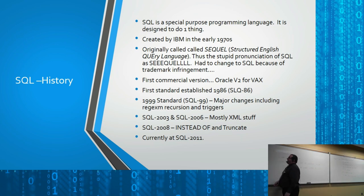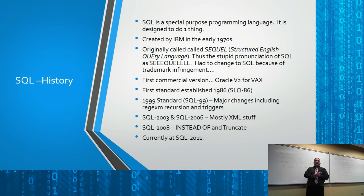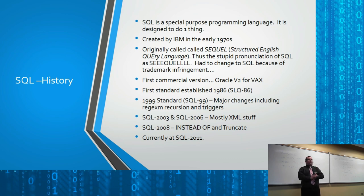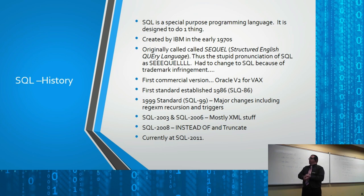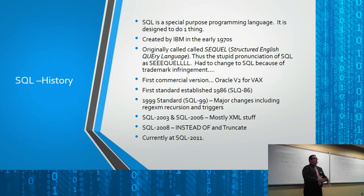The first SQL standard was established in 1986 — it took about 14 to 16 years — and it's called SQL 86. They're very original with naming: every new standard just tacks on the last two digits of the year. SQL 86 established the basic concepts. The 1999 standard, SQL 99, brought major changes to the rules, and this is the standard most database servers use as their base today.